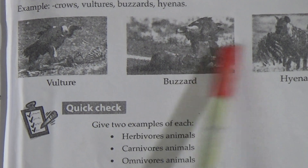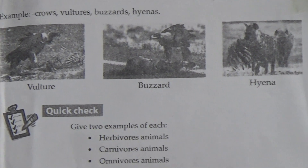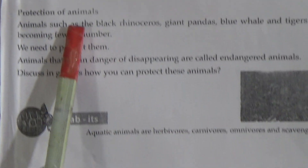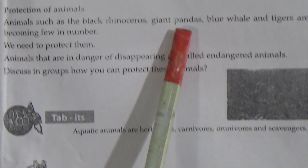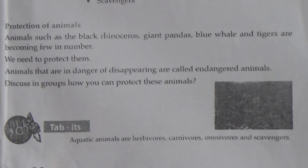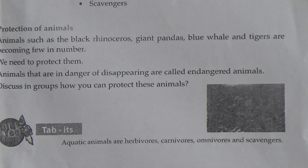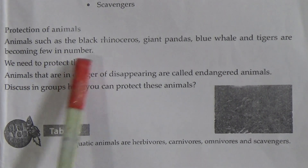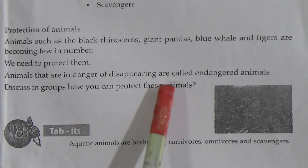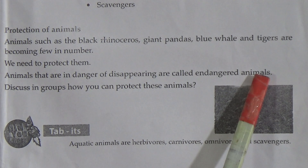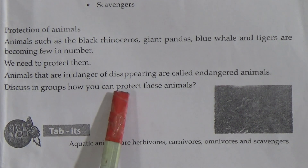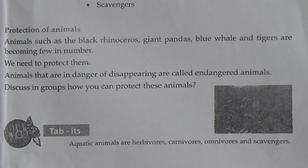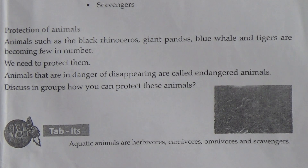Here is the picture of a vulture and a hyena. Protection of animals: animals such as the black rhinoceros, giant pandas, blue whales, and tigers are becoming few in number — they are already in an extinct position. Animals that are in danger of disappearing are called endangered animals. We need to protect them. The endangered animals include black rhinoceros, giant pandas, blue whales, tigers, etc.